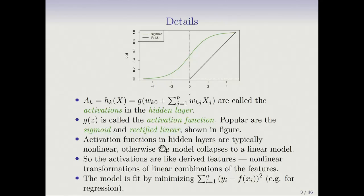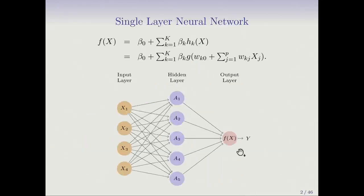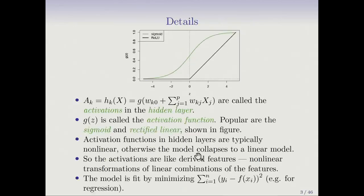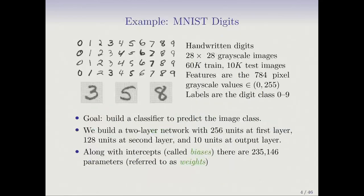With all that in place, you fit the model by minimizing, say for regression and squared error loss, you minimize the sum of squares like you would for regression. But this F encompasses a lot of parameters. There's the parameters going from the hidden layer to the output layer and from the inputs to all the hidden units. So there's a lot of parameters. And you'll see that's something that characterizes neural networks. There can be lots of parameters.